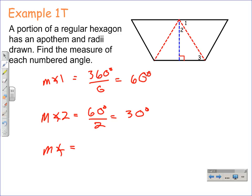So the measure of angle three is equal to 180 minus the sum of 30 degrees and 90 degrees, which gives 180 degrees minus 120, which gives 60 degrees. So the measure of angle three is 60 degrees. So here's our three answers: the measure of angle one, angle two, and angle three.